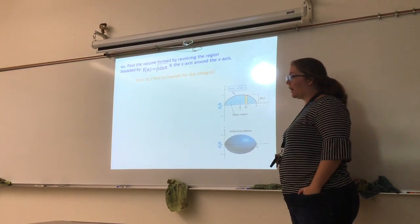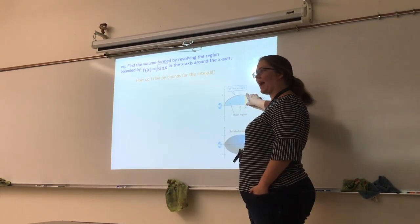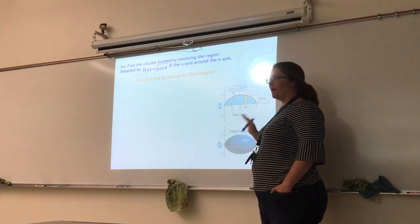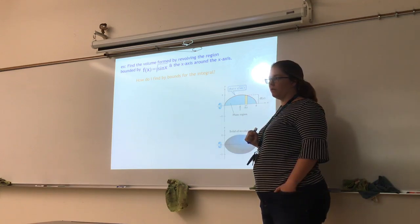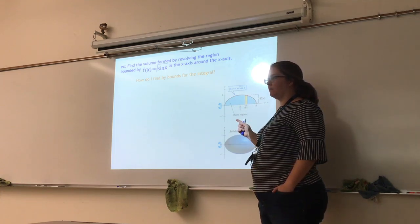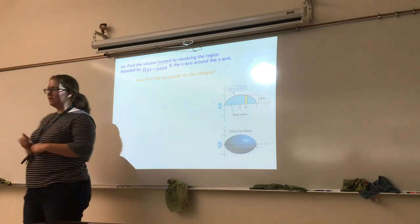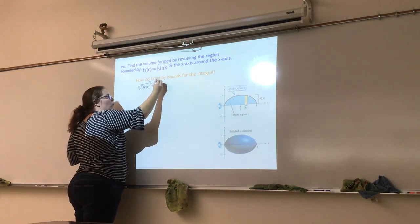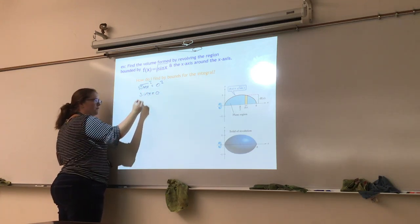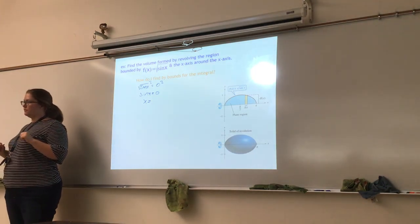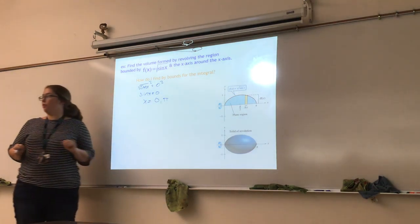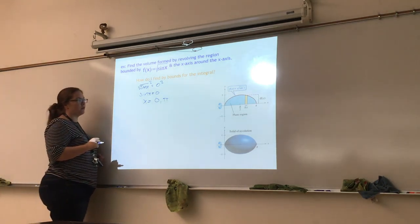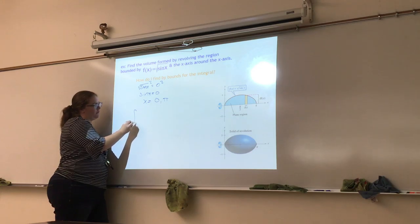It's really nice when we're bounded by the x-axis and revolving around the x-axis — it means there's no gap between our function and the axis. Now, you could look at the picture to find the bounds. But how could we find the boundaries? It's bounded by the function and the x-axis, so I set the square root of sin x equal to zero. I square both sides to get sin x equals zero. Where is sine zero? At zero and pi.